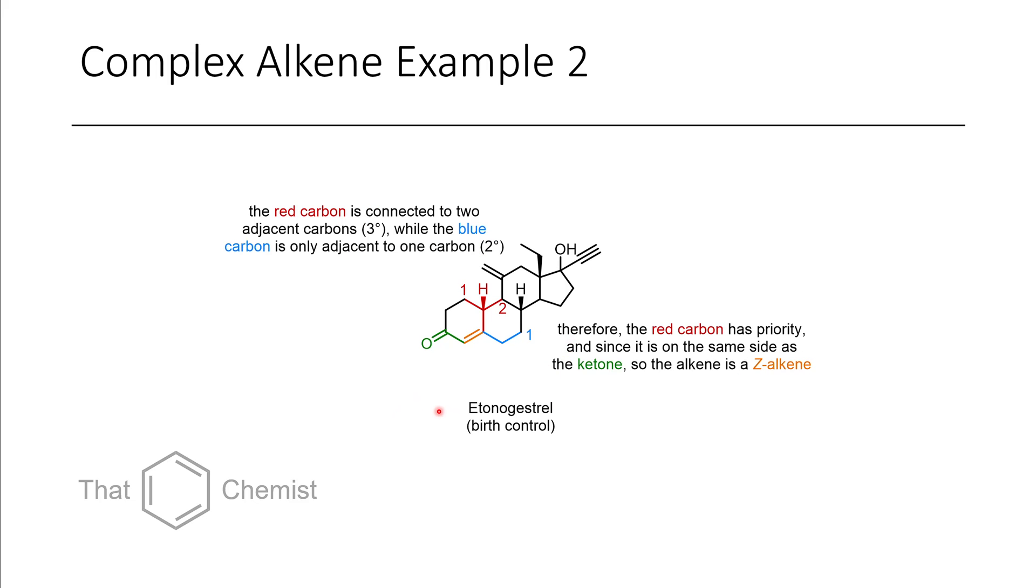Another complex example is in etonogestrel, which is a birth control. We have this orange olefin here. We only have one substituent on this side, ignoring the hydrogen. And so, this carbon with a carbonyl takes priority. Then, we have this isopropyl group versus this ethyl group. Because the ethyl group is a CH2 with only one carbon adjacent, compared to the isopropyl, which is a carbon with two carbons adjacent, the two carbon would take priority. And because the red and the green substituents are on the same side, they would be together, they would be zusammen. And so, we have a Z alkene.